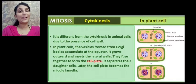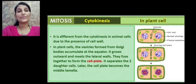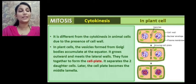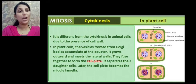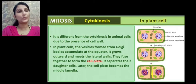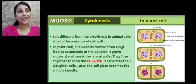In the case of plant cells, we know plant cells have a cell wall. So small vesicles appear. The vesicles which are formed by the Golgi apparatus accumulate towards the equator. And then the vesicles grow outwards from the equator towards the outer margins and they fuse together. The vesicles which have grown towards the outer margins fuse with the plasma membrane.